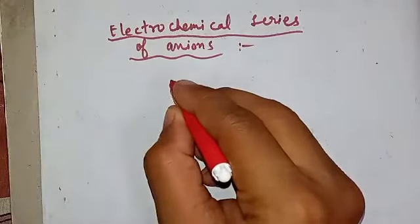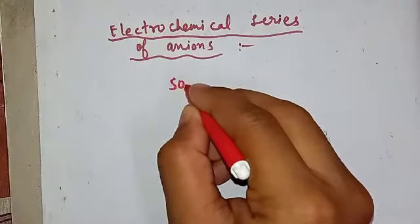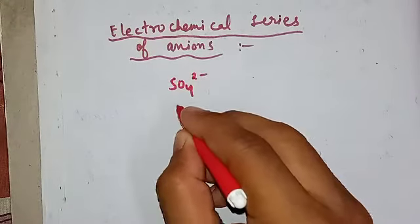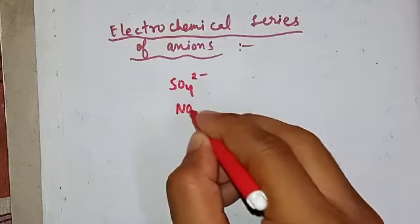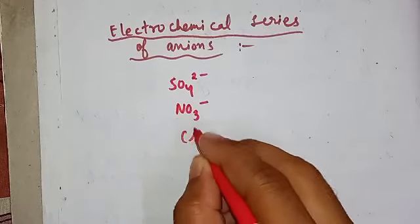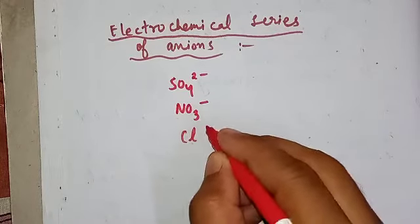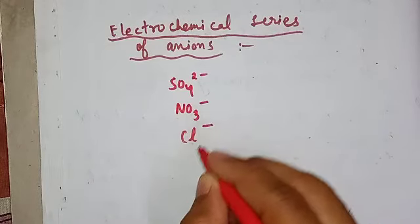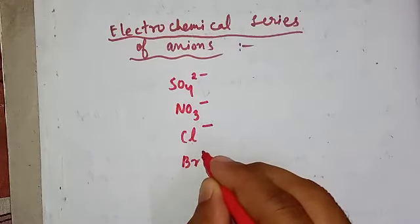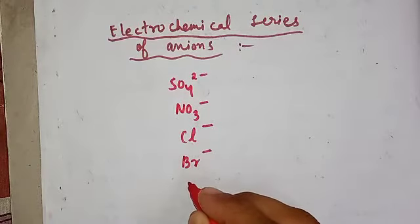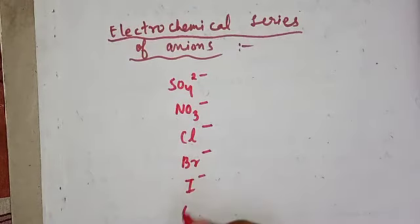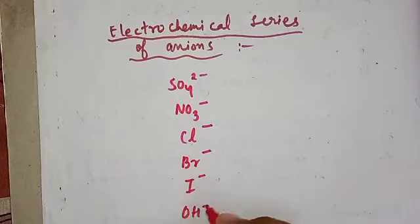The first anion is SO4²⁻ (sulfate), the second is NO3⁻ (nitrate), the third is Cl⁻ (chloride), then Br⁻ (bromide), then I⁻ (iodide), and the last one is OH⁻.